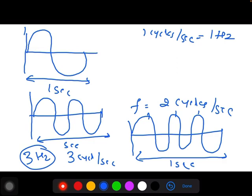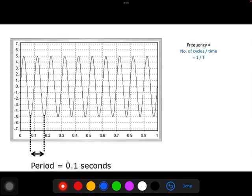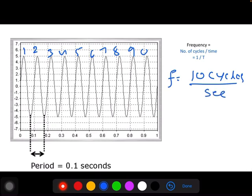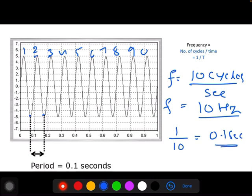If you consider one second with 10 cycles here, one, two, three, four, five, six, seven, eight, nine, ten, that means in one second there are 10 cycles. What is the frequency? 10 cycles per second, which is 10 Hertz. If you want to calculate the time period, it's the time taken to complete one cycle. Between two valleys or two peaks, the time is 0.1 second. One divided by 10 equals 0.1 second.